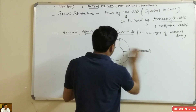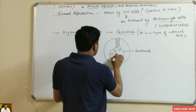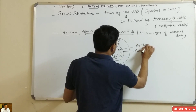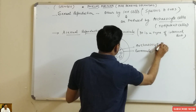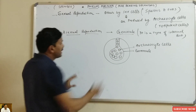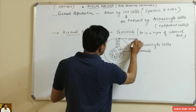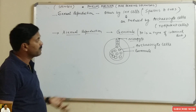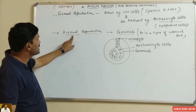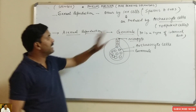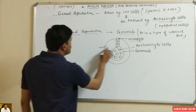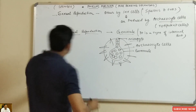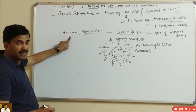The gemmule consists of archaeocyte cells, and there is a pore known as the micropyle through which these archaeocyte cells come out and form a new organism. So asexual reproduction occurs by an internal bud known as the gemmule. The gemmule is also surrounded by spicules.